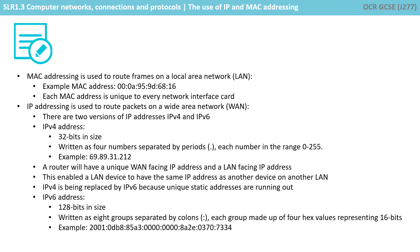So let's have a quick recap. MAC addressing is used to route frames on a local area network, and each MAC address is unique to every network interface card. IP addressing is used to route packets on a wide area network, and there are two versions. IPv4 is 32 bits in size, written as four numbers separated by periods, each in the range 0 to 255. A router will have a unique WAN-facing IP address and a LAN-facing IP address, enabling LAN devices to share IPv4 space. IPv4 is being replaced by IPv6 because unique static addresses are running out. IPv6 is 128 bits in size, written as eight groups separated by colons, with each group made up of four hexadecimal values representing 16 bits.